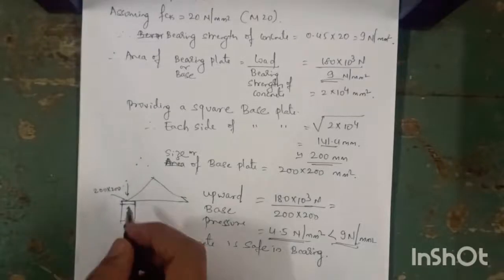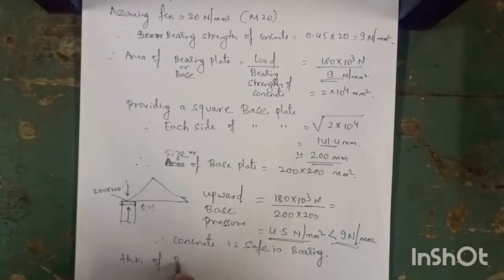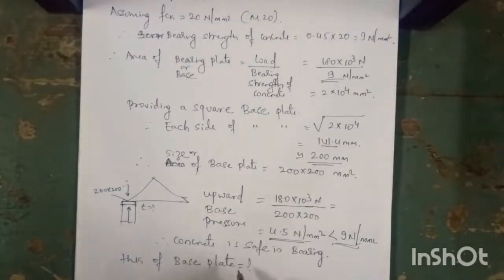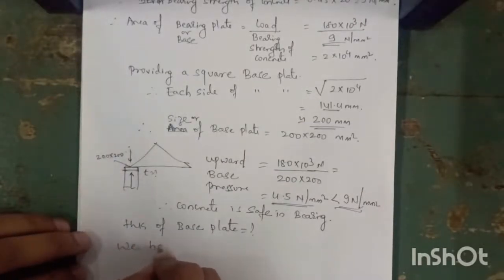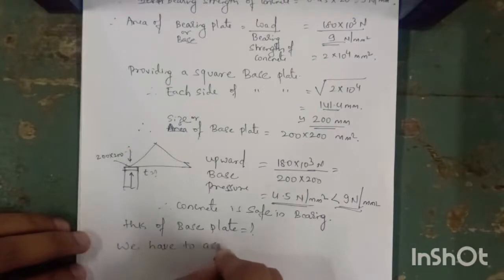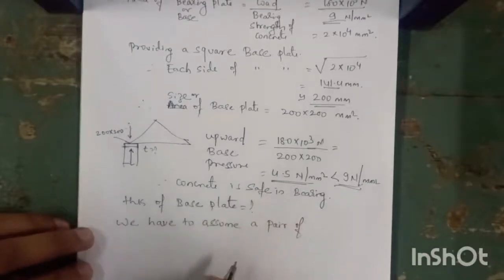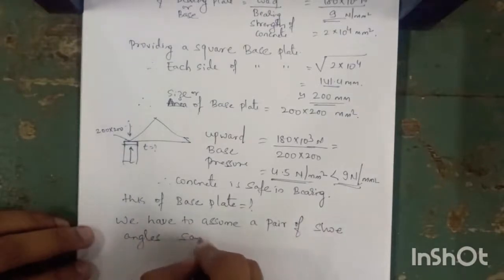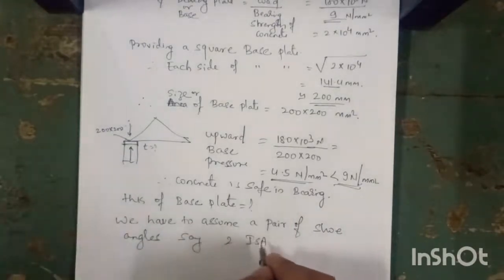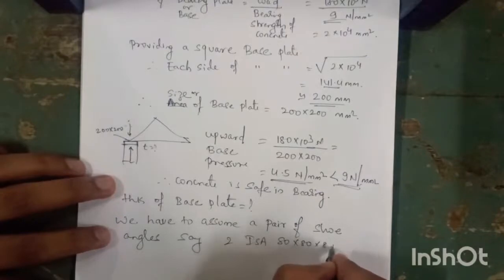Next, we have to calculate the thickness of the base plate. To calculate the thickness of the base plate, we have to assume a pair of shoe angles — say 2 × ISA 80 × 80 × 8 mm.